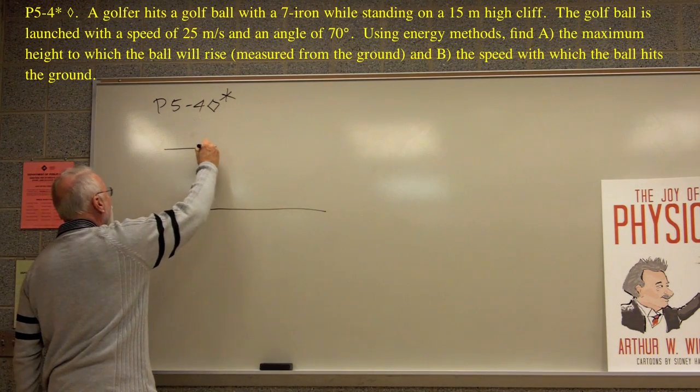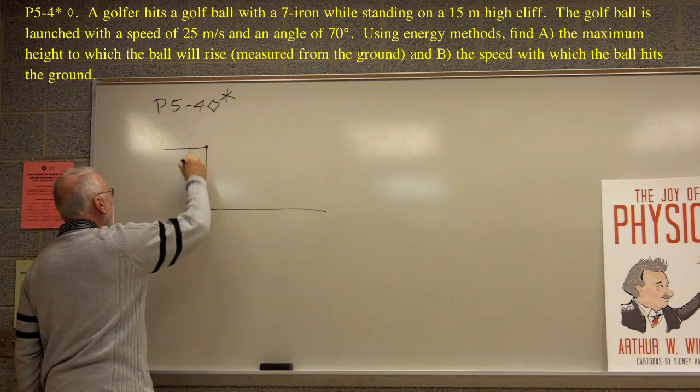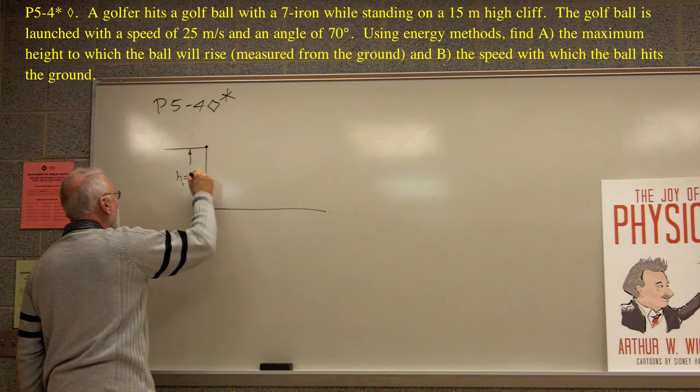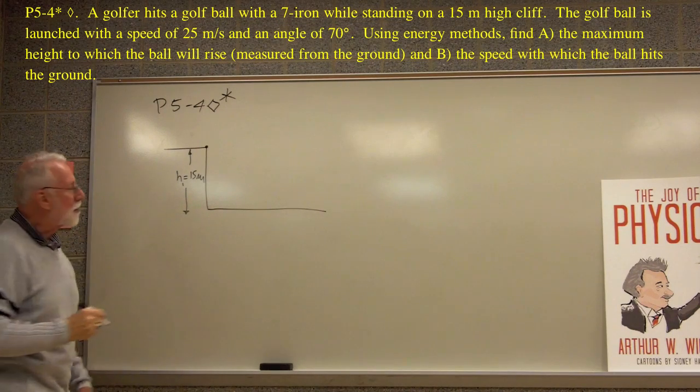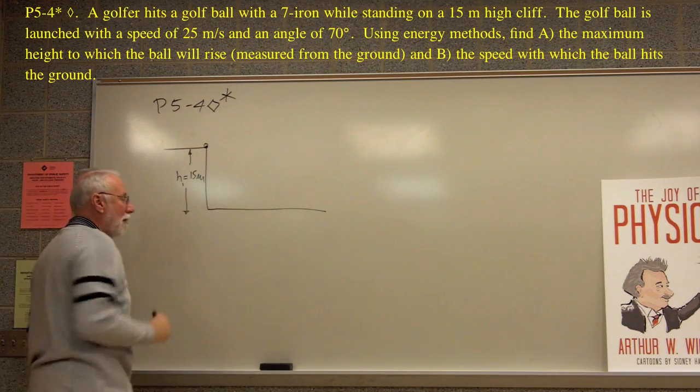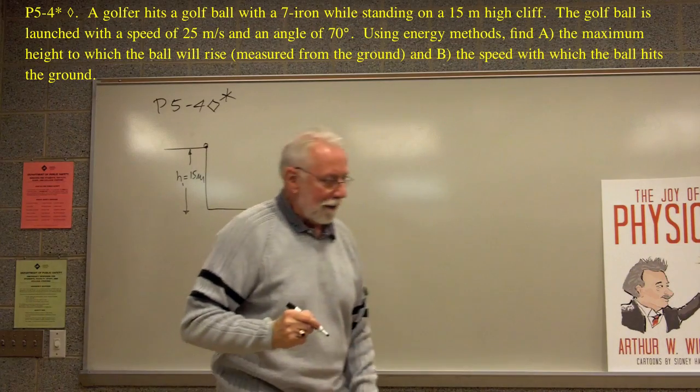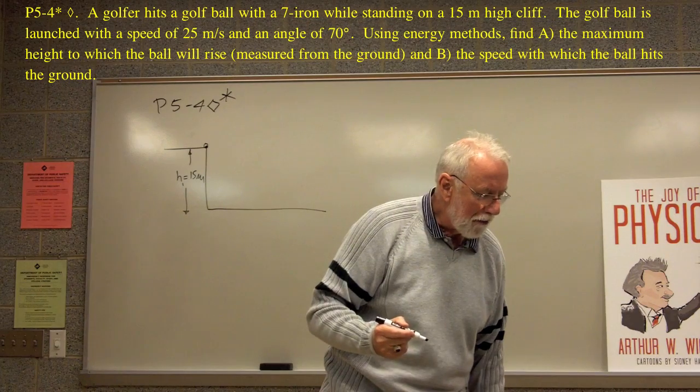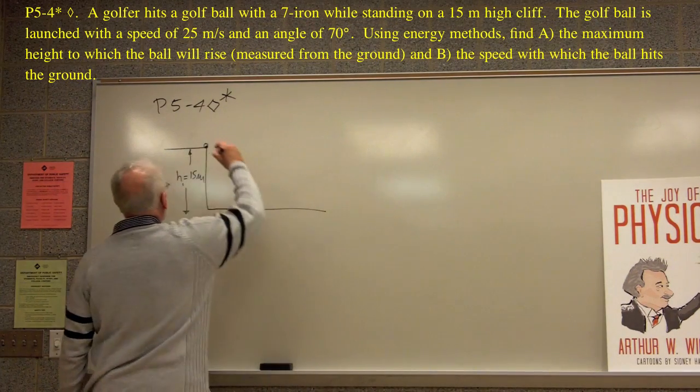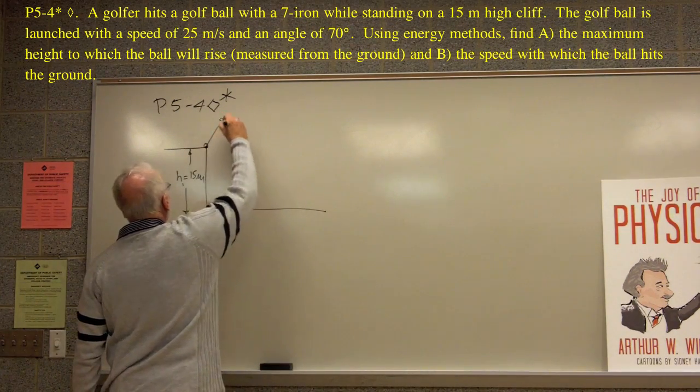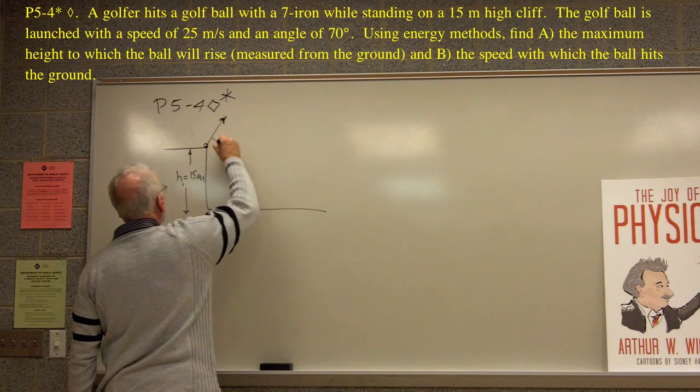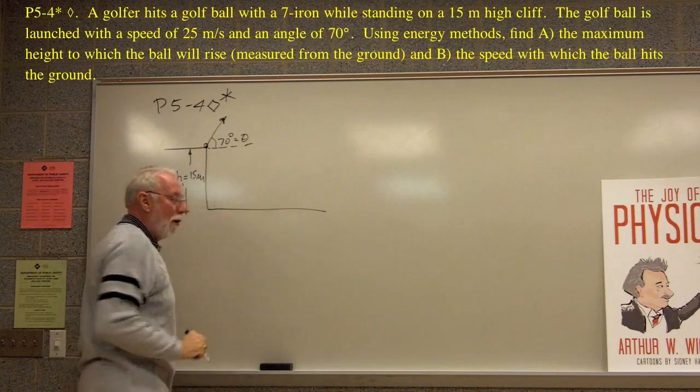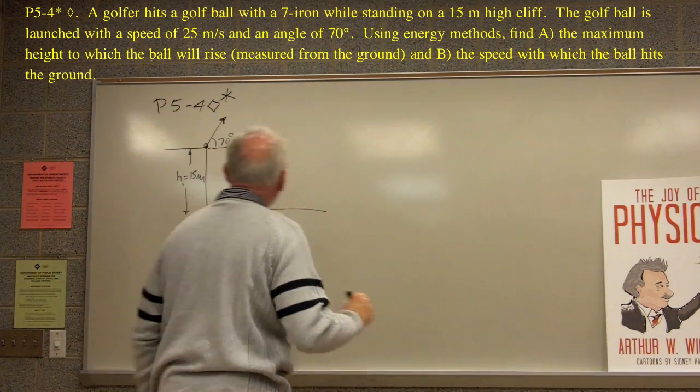It says a golfer hits a golf ball standing on a 15 meter high cliff. So of course, this lends itself to a picture very nicely. So here's the cliff at a height of 15 meters. And it says a golfer hits a golf ball here from this cliff with a seven iron. Little do we know about what seven irons do, but nevertheless, it's a high lofted club. It's launched at a speed of 25 meters per second at an angle of 70 degrees. So here's the golf ball being launched. 70 degrees is the angle theta, and it says that the launch takes place with a speed of 25 meters per second.